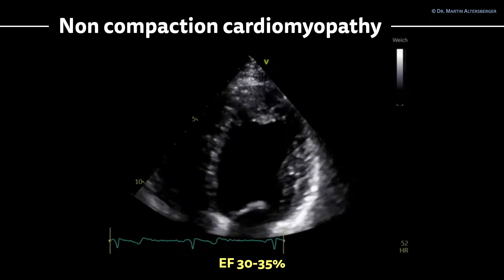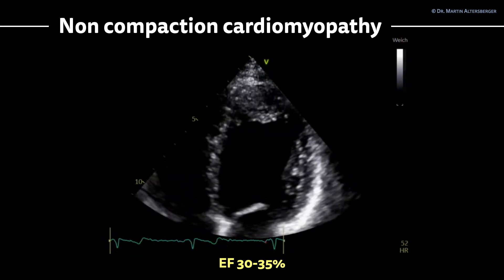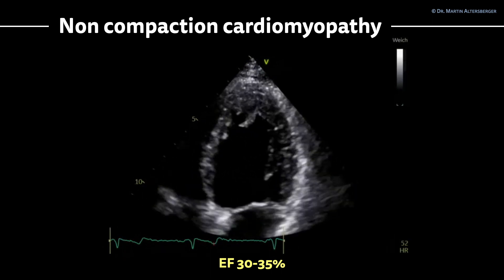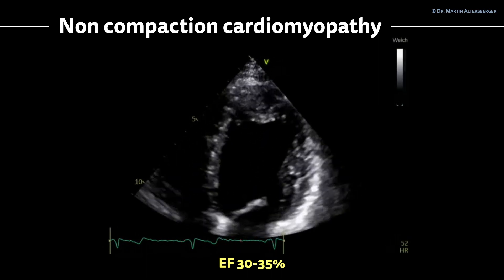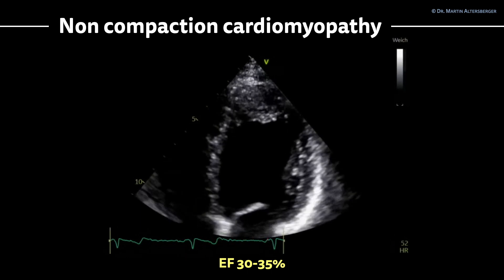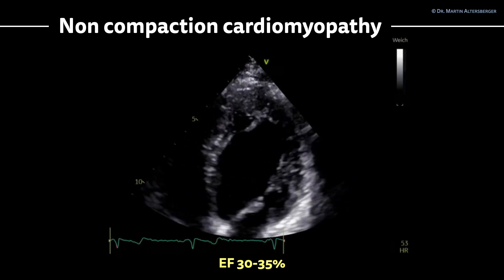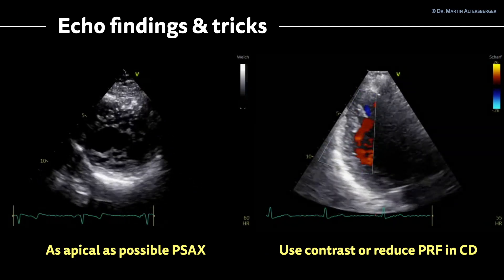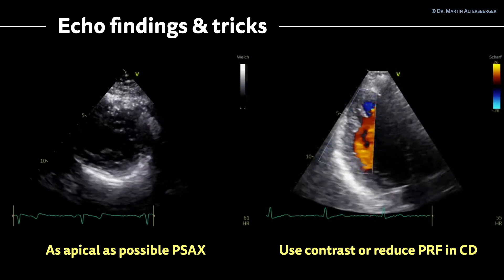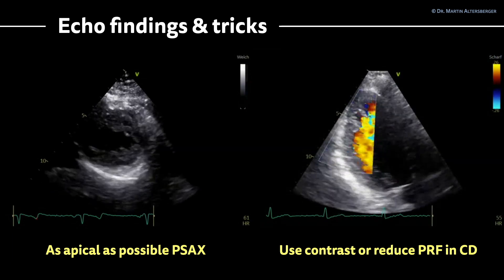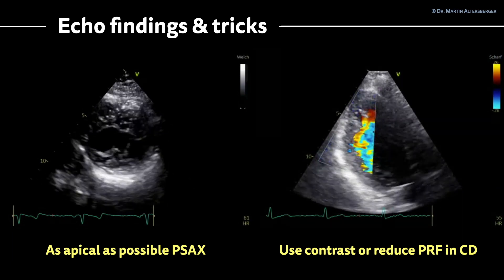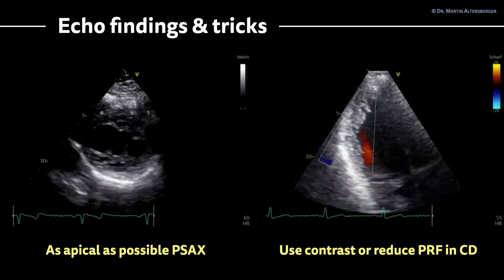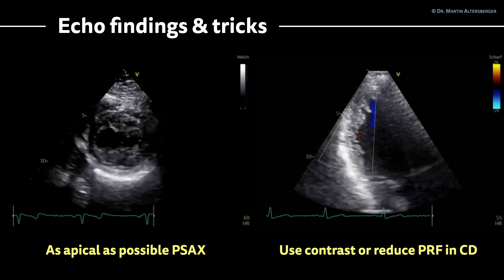In the first follow-up exam, the ejection fraction is probably in the range of 30 to 35 percent. If you look at the apical regions you can see more prominent trabeculations, though it's very hard to see. Using a parasternal short axis view and tilting the transducer further downwards toward the subapical region displays the trabeculations quite nicely and helps differentiate where they are located.